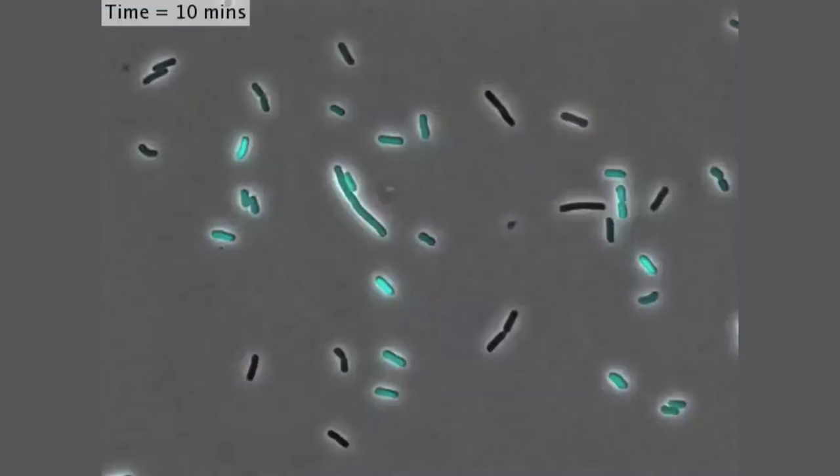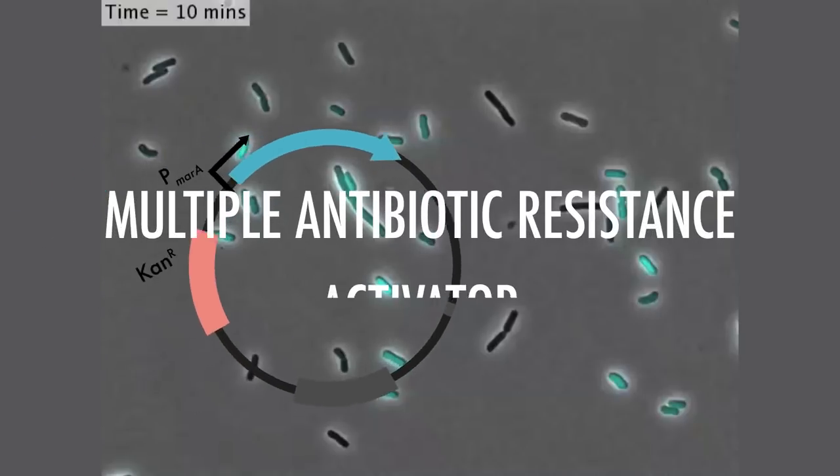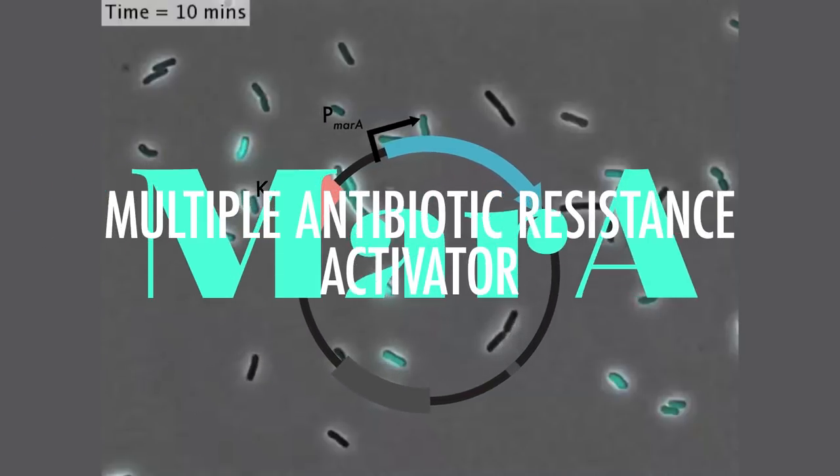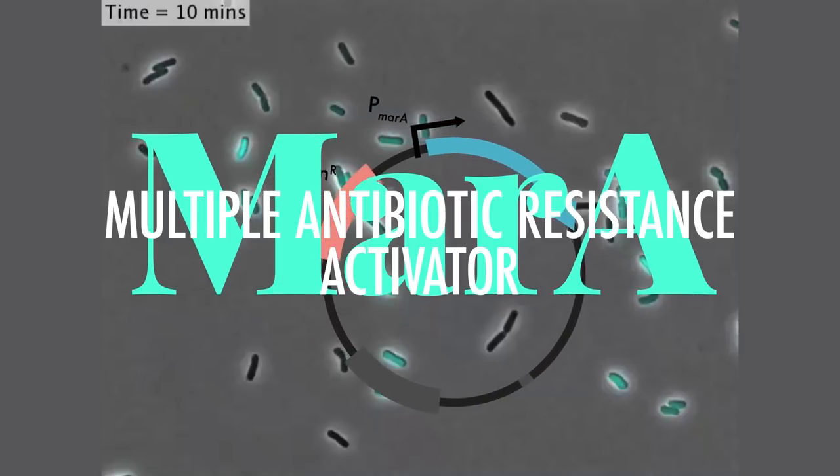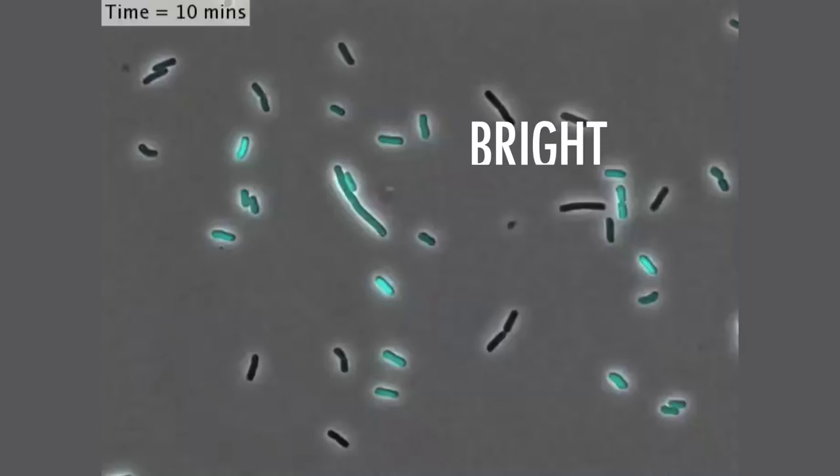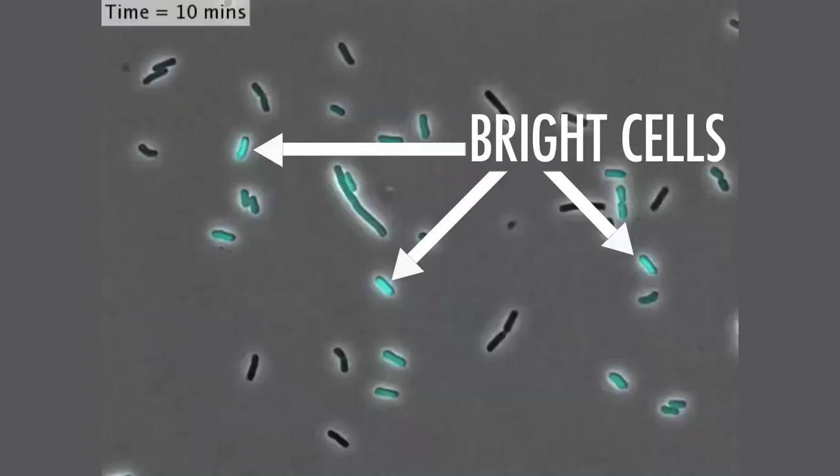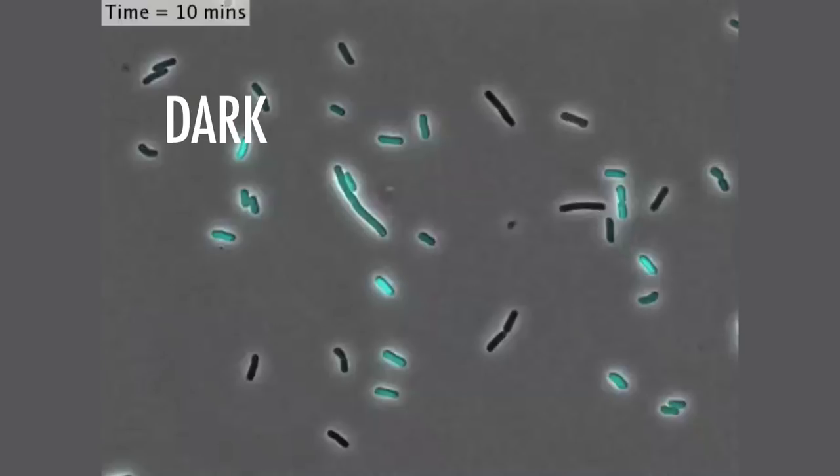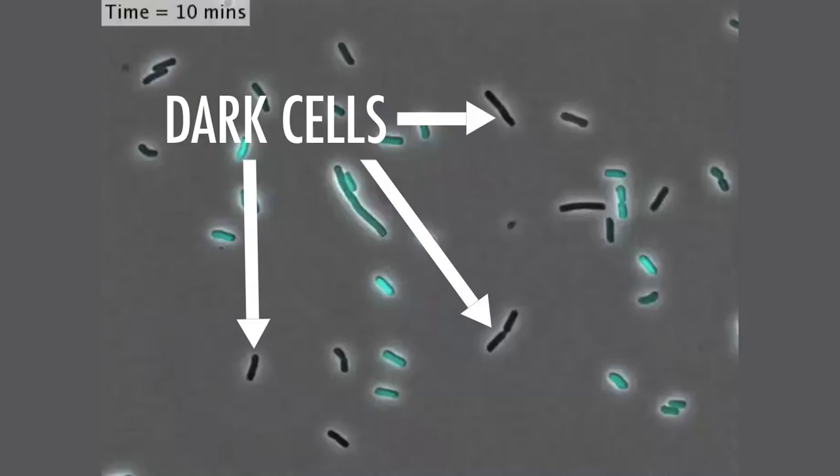let's look at how stochasticity impacts how bacteria respond to antibiotics at the single cell level. Here we have cells transformed with a fluorescent reporter for the multiple antibiotic resistance activator, MarA. This gene is implicated in transient antibiotic resistance. Now, some cells are bright, corresponding to high concentrations of MarA, and some cells are dark, corresponding to low concentrations of MarA.